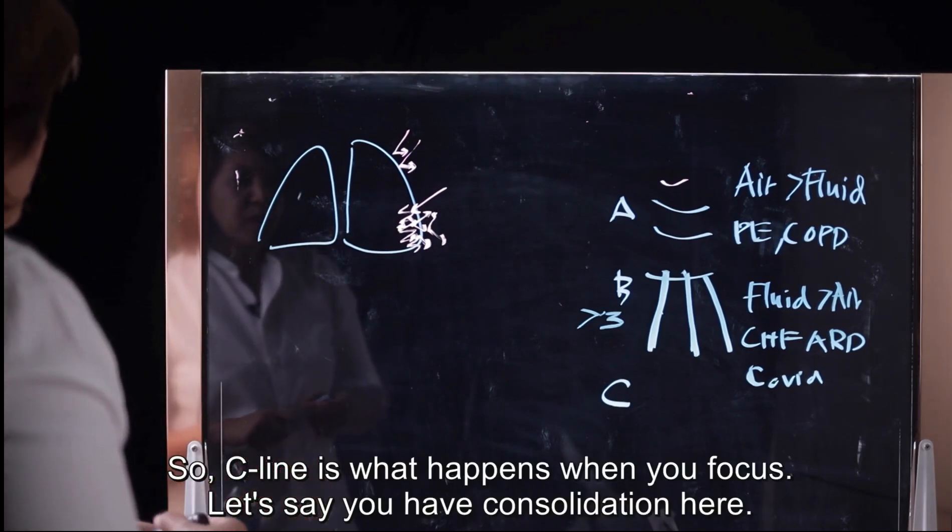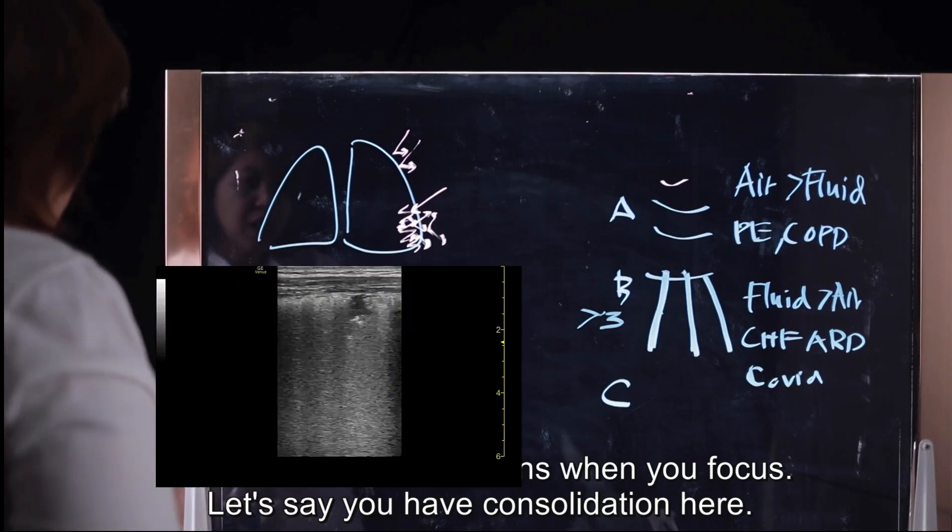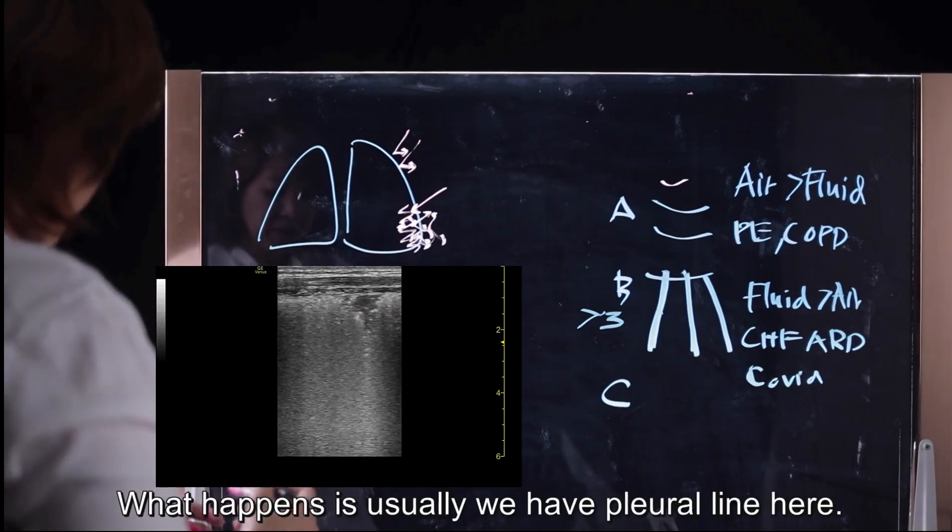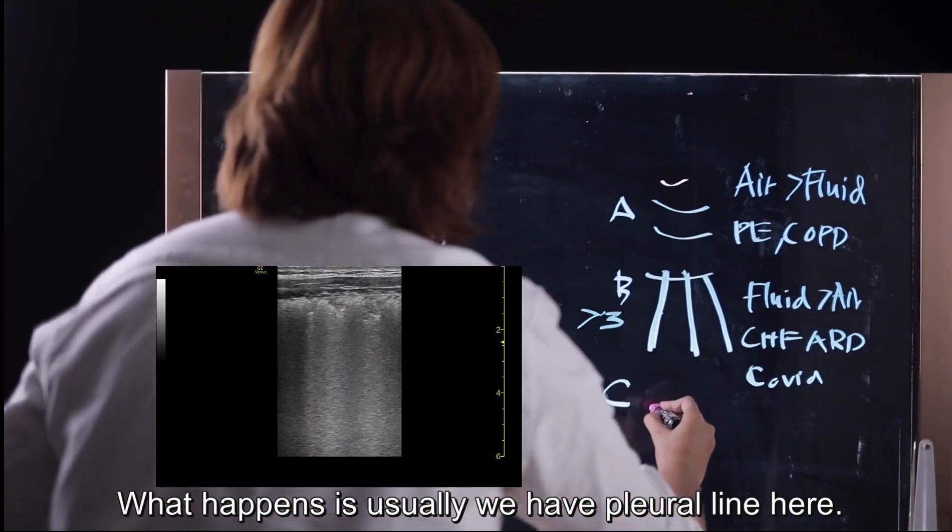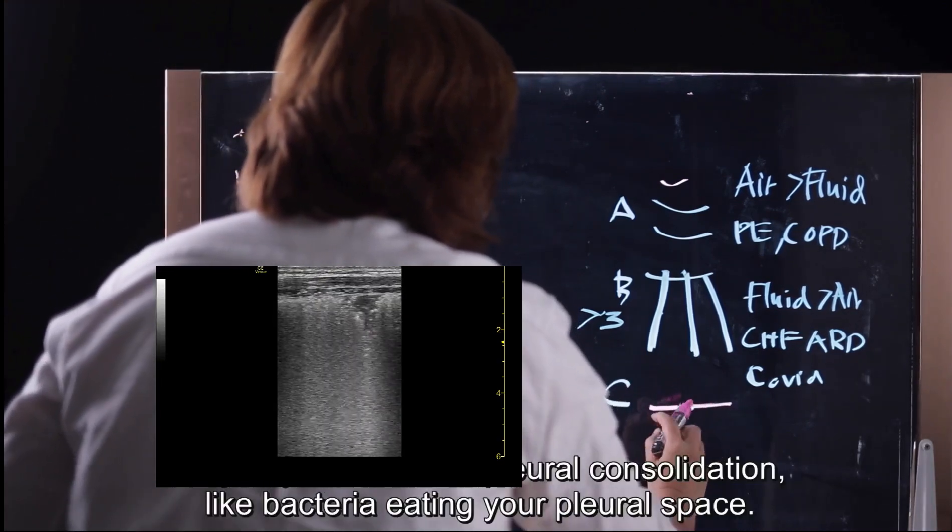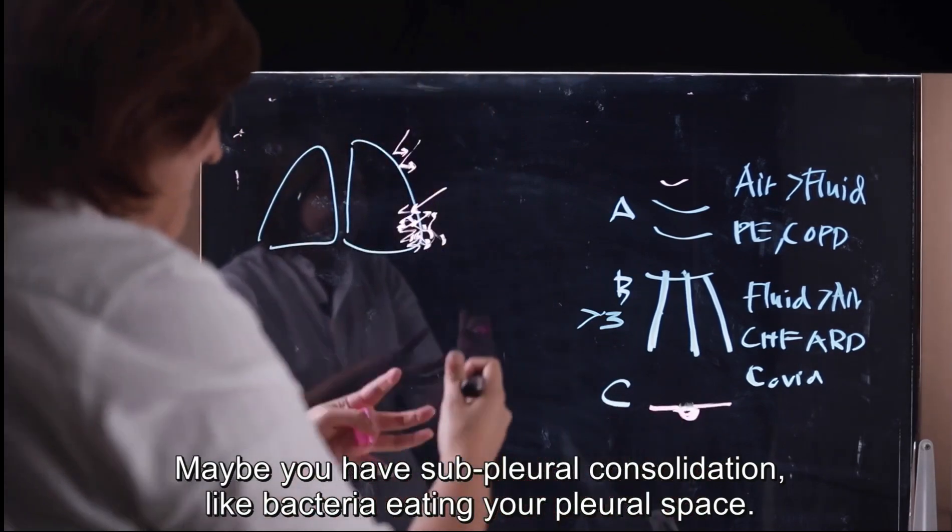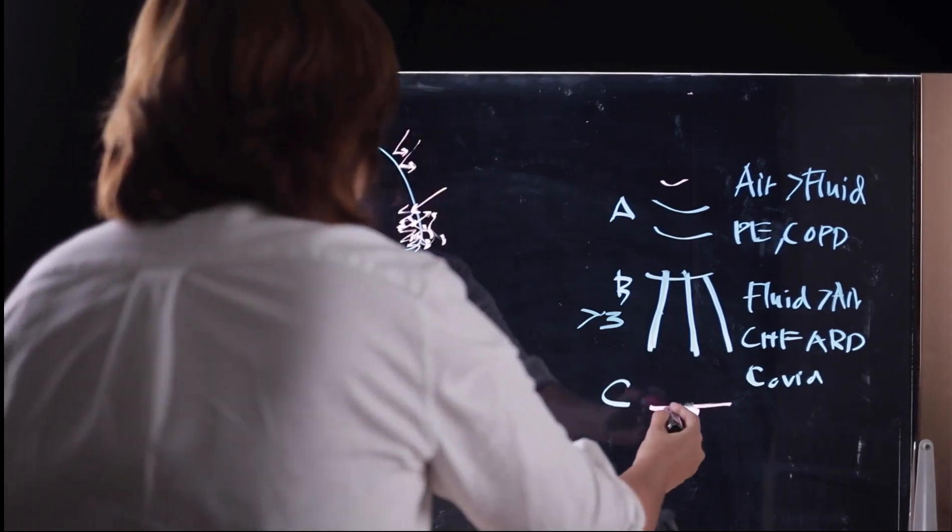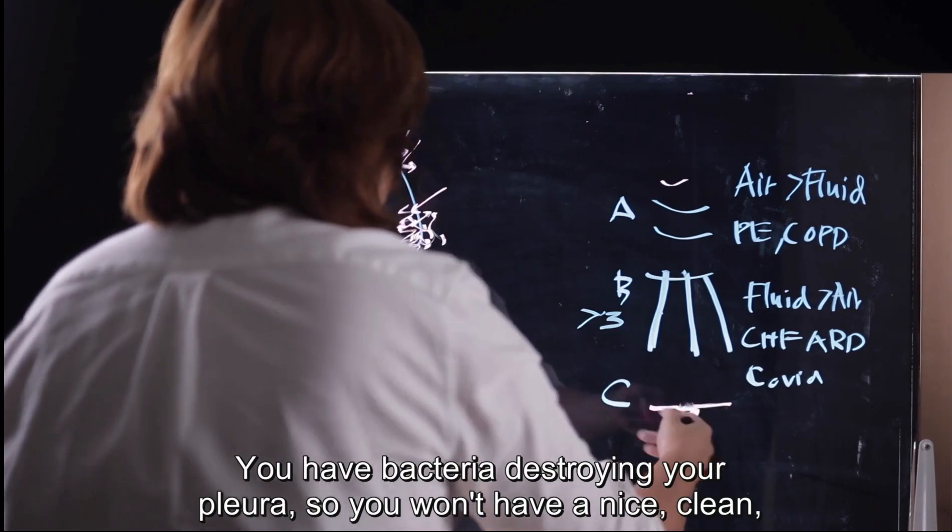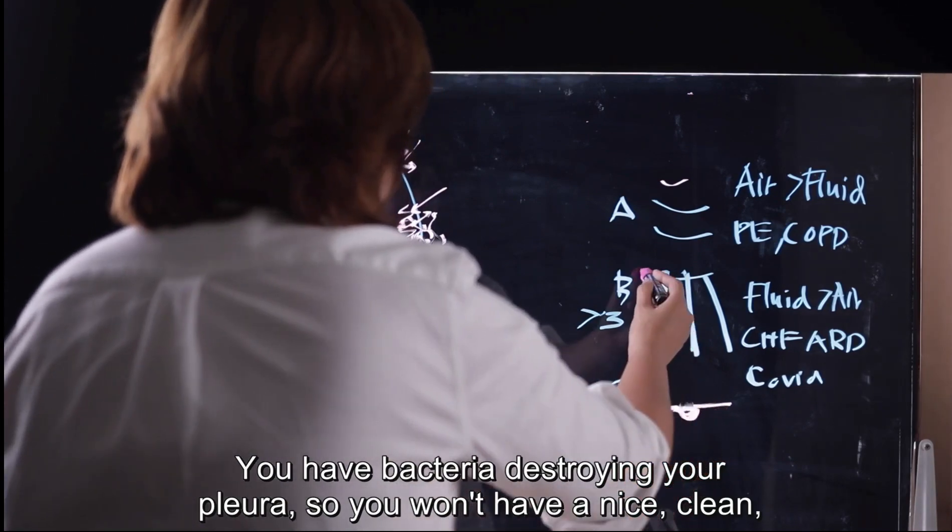The third thing is C-line. So C-line is what happens when you consolidate. So let's say you have consolidation here. What happens is actually you have pleural line here, and then you have sub-pleural line consolidation. Because you have bacteria that eat your pleural space, your pleural line.